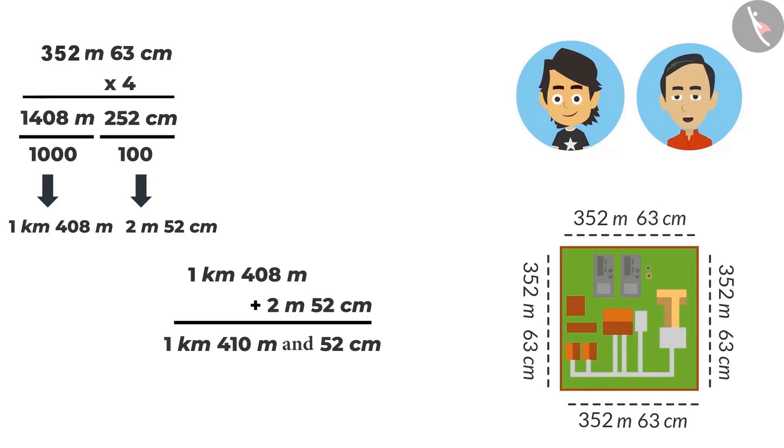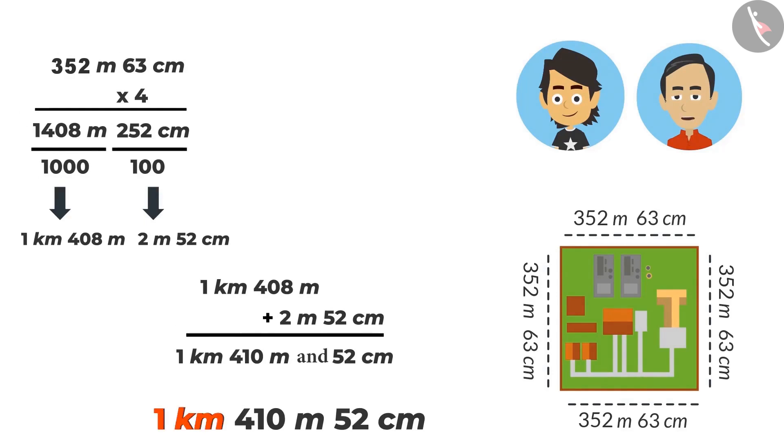This would be the correct way of writing it. 1 kilometre, 410 metres, 52 centimetres. Which means 1 kilometre and 410 metres and 52 centimetres.